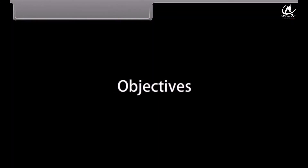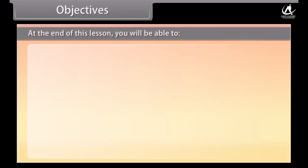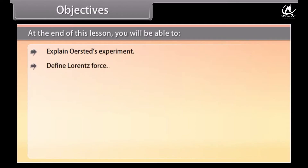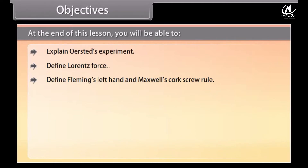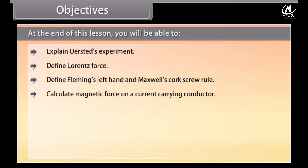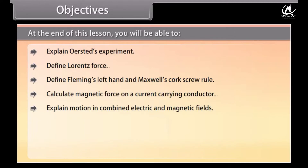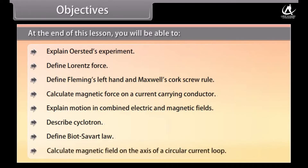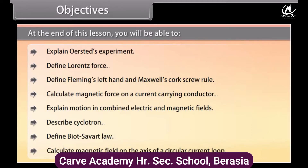Objectives. At the end of this lesson, you will be able to: explain Oersted's experiment, define Lorentz's force, define Fleming's left hand and Maxwell's corkscrew rule, calculate magnetic force on a current carrying conductor, explain motion in combined electric and magnetic fields, describe cyclotron, define Biot-Savart law, and calculate the magnetic field on the axis of a circular current loop.